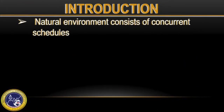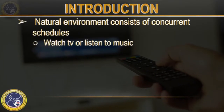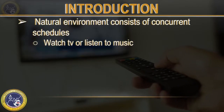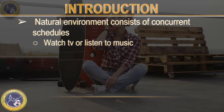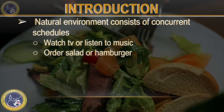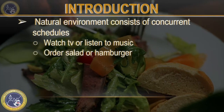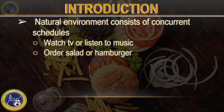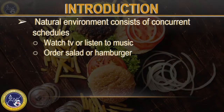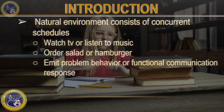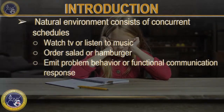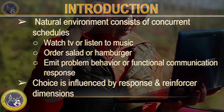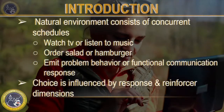The natural environment consists of concurrently available reinforcers, each on a different schedule, and we allocate our responding between those alternates. Even when program contingencies are in effect, the individual has a choice — respond on the program contingency or some other concurrently available unprogrammed alternate. These choices are influenced by both response and reinforcer dimensions.